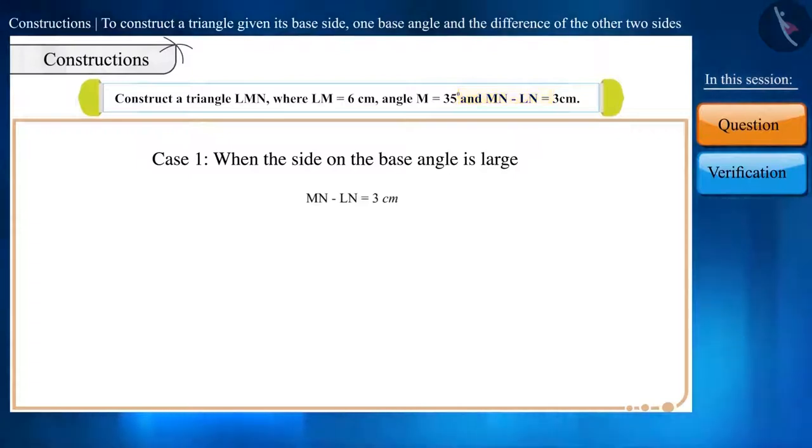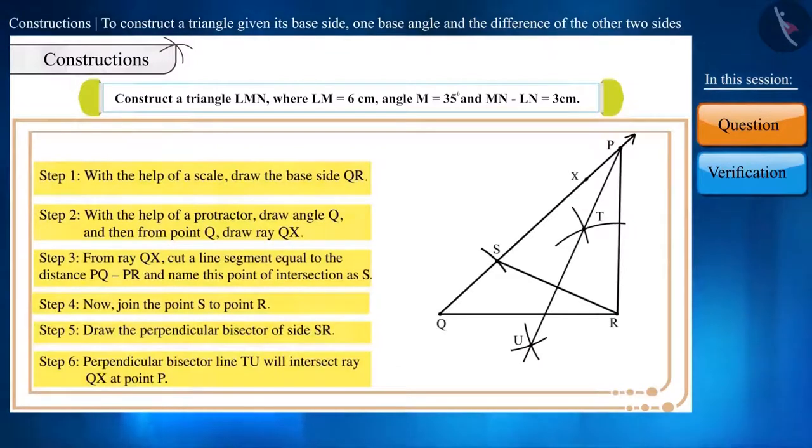By looking at this, we know that side MN is greater than side LN. In side MN, M is present, which means MN is a side formed on angle M. Therefore, the side on the given base angle is greater than the other side. So, we will do the construction of this triangle according to the steps of case 1.